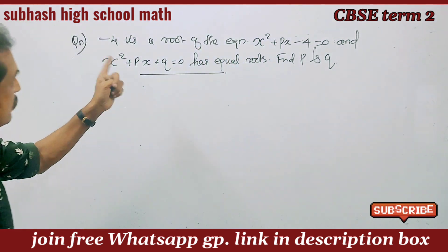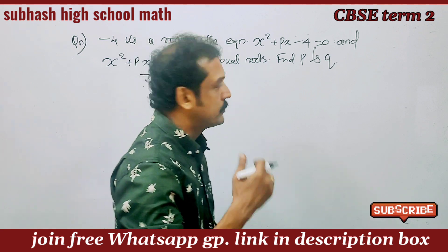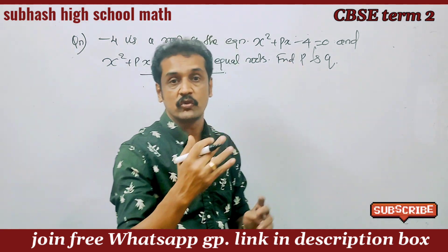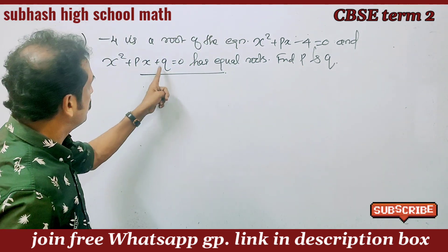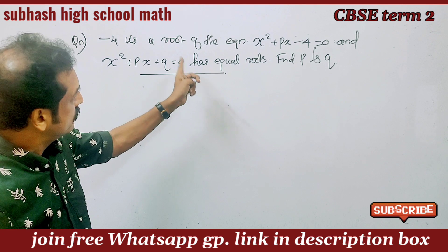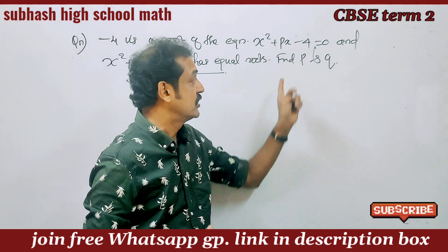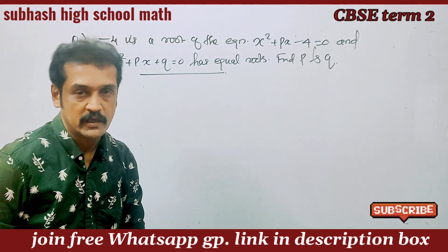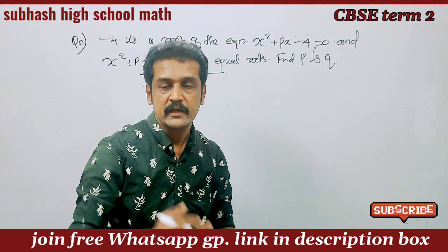Minus 4 is the root of the quadratic equation x squared plus px minus 4 is equal to 0. And x squared plus px plus q equals 0 has equal roots. Find the values of p and q. We have two conditions.